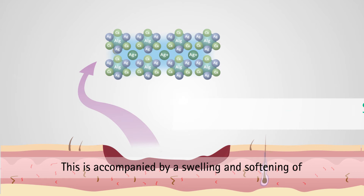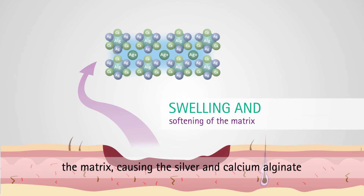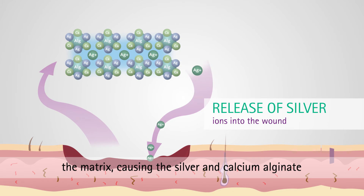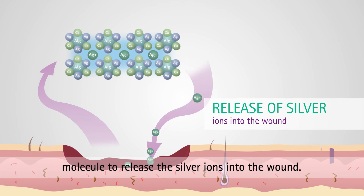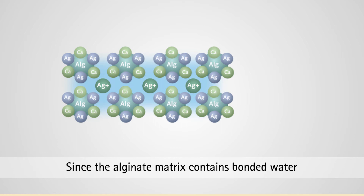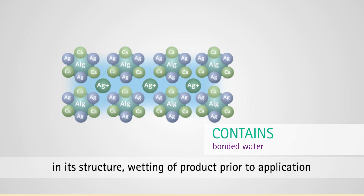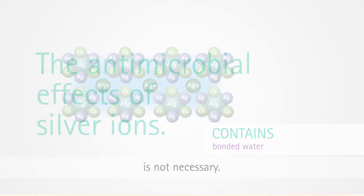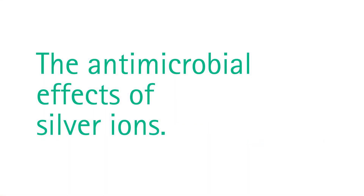This is accompanied by a swelling and softening of the matrix, causing the silver and calcium alginate molecule to release the silver ions into the wound. Since the alginate matrix contains bonded water in its structure, wetting of the product prior to application is not necessary.